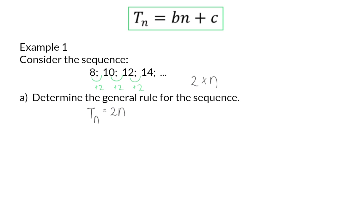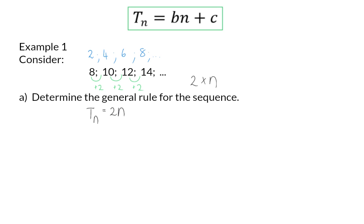If we stop our general formula here, we accept that the sequence starts at 2 and that we add 2 from there onwards, which is not correct. Therefore, we need to determine what should be added.